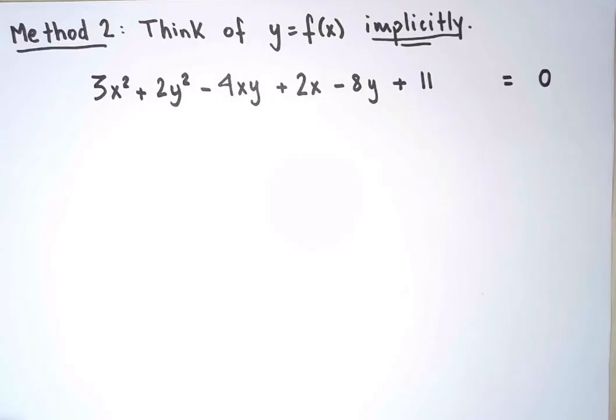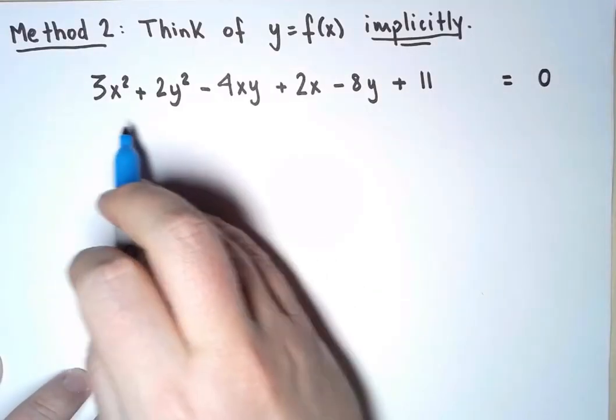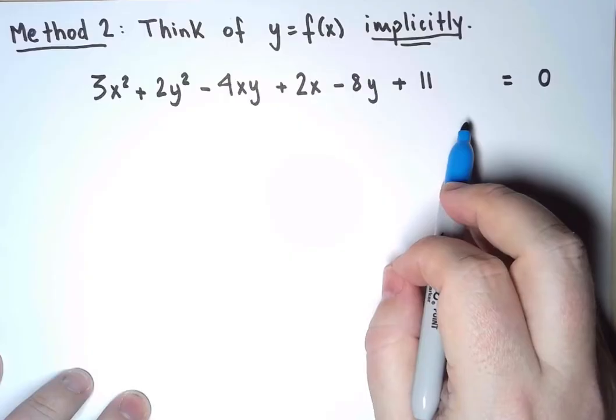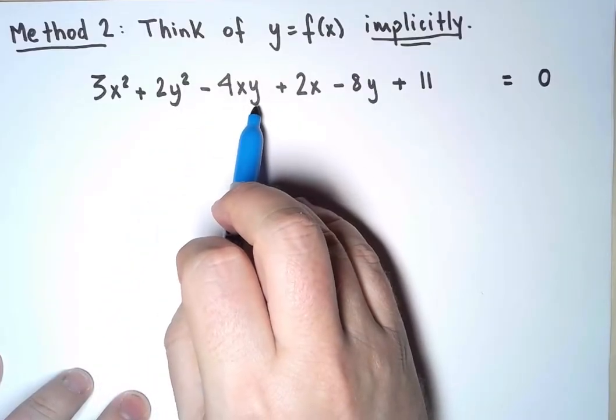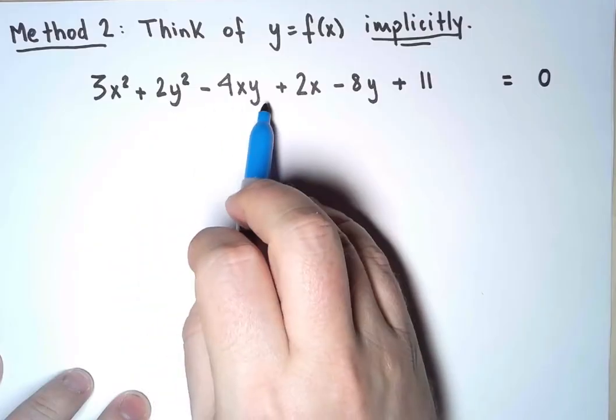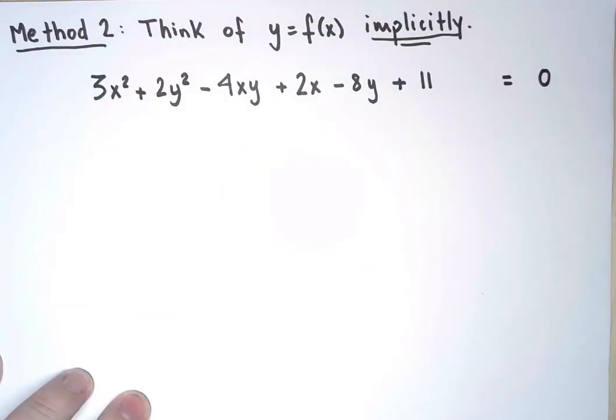I am not going to solve for y. Instead, I'm going to work with this equation. And implicitly, every time I see a y, I'm going to think that it stands for a certain function of x. So y equals f for a function f, whose form I don't know and I don't need to know. And then I will differentiate implicitly using the chain rule.